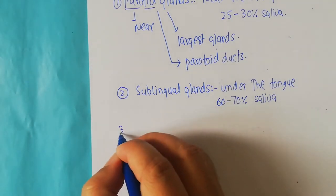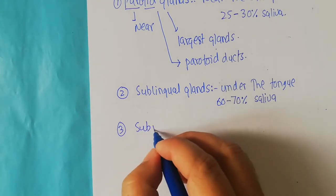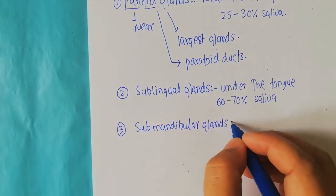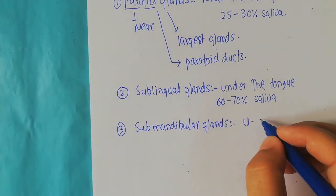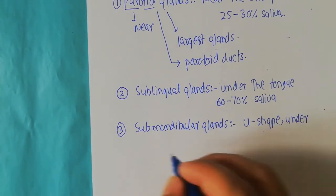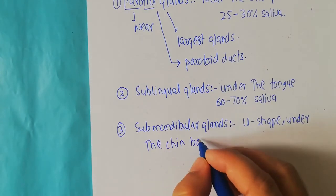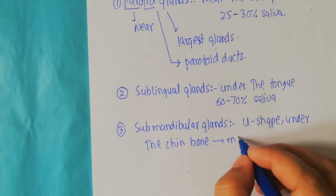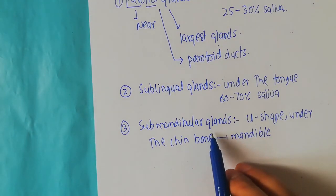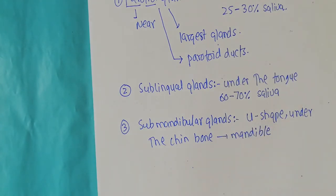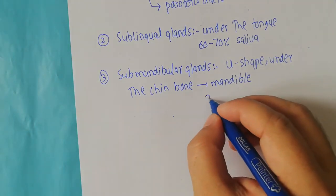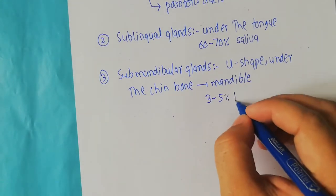The third type of major salivary gland is the submandibular glands. These are U-shaped glands present under the chin bone, which is known as the mandible — so the glands under this bone are called submandibular glands. These submandibular glands release a very small quantity of saliva, about 3 to 5 percent of the total.